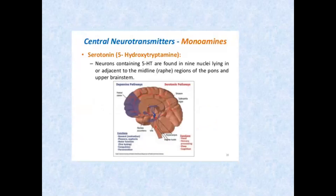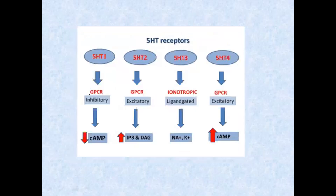Another neurotransmitter is serotonin. Serotonin is an inhibitory neurotransmitter and also a biogenic amine. There are four subtypes of serotonin receptors: 5-HT1, 5-HT2, 5-HT3, and 5-HT4. Serotonin is also known as 5-hydroxytryptamine (5-HT).